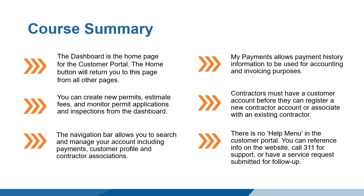We've covered a lot of material here. We talked about the two activities that could be done from the dashboard: apply for permits and estimate fees. And the four tabs on the customer dashboard: My Inspections, My Activities, My Projects, and My Businesses.